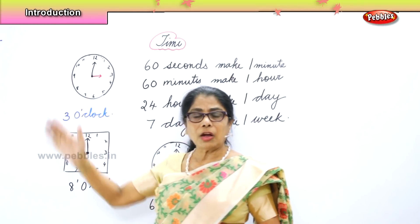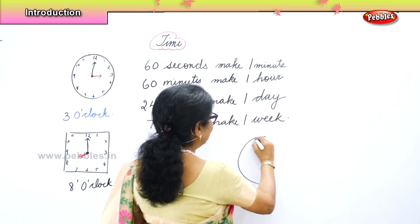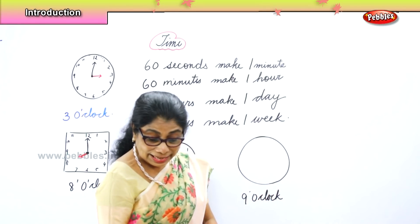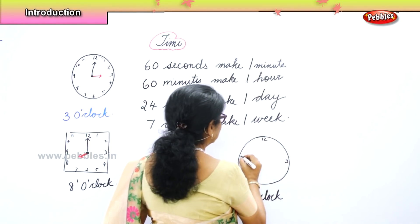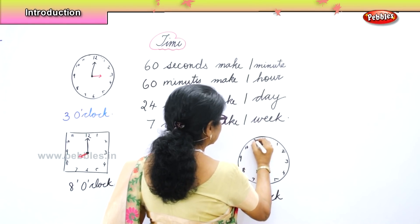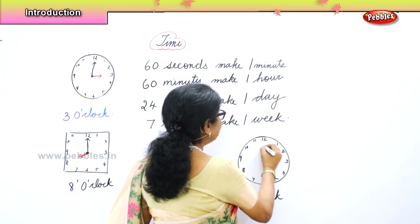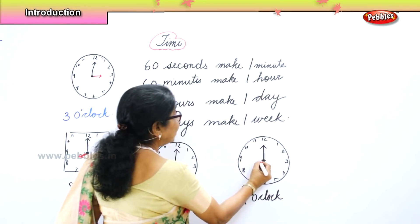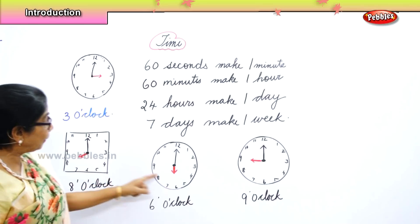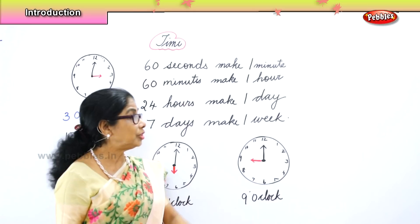Now at what time you come from school? You come from school at 3 o'clock. At what time you will have dinner? Say 9 o'clock. Show on the clock face 9 o'clock. First the minute hand faces the 12, then the short hour hand faces 9. That is 9 o'clock.